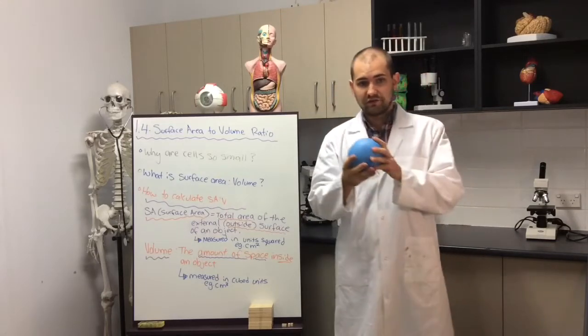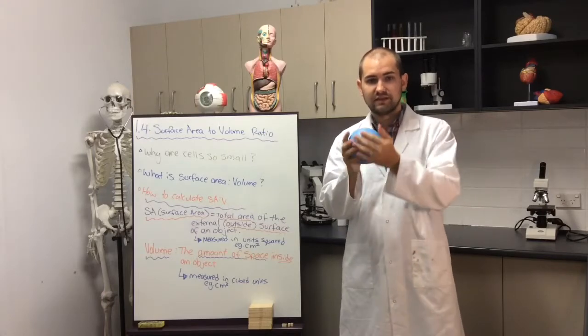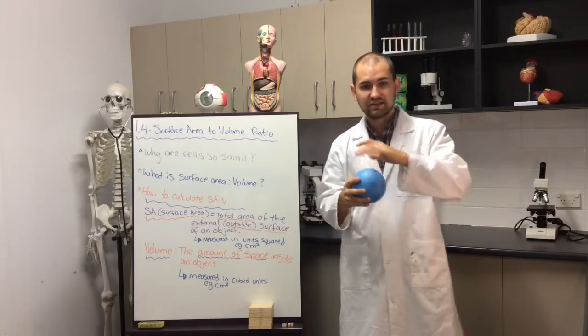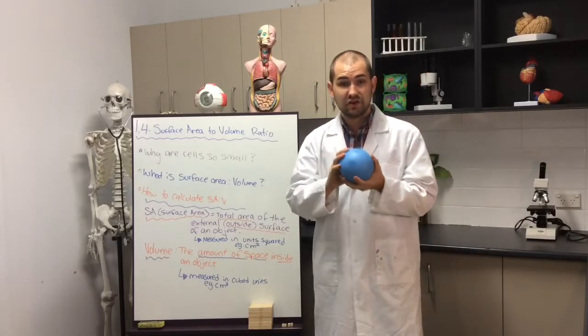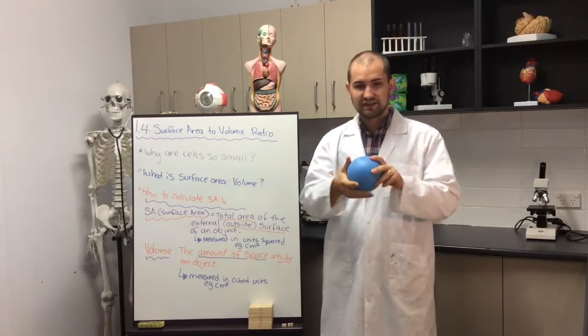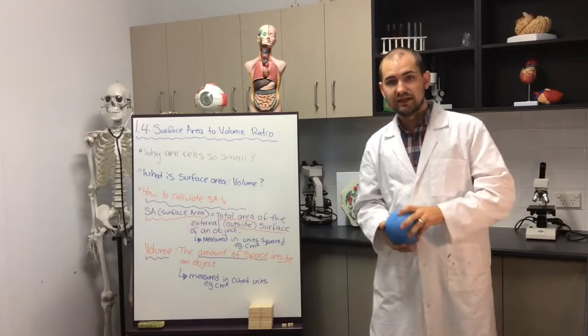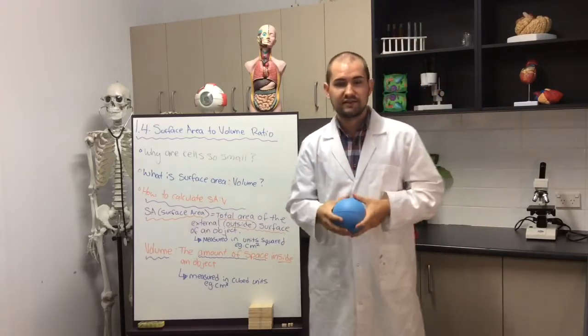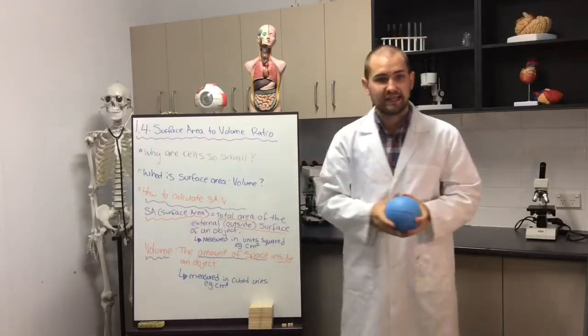The cell surface, so imagine that this here is a cell, the surface of this object is called the membrane. That's where that exchange occurs, that movement. So this membrane has a surface area. The area is just the amount of space on the external surface of an object. You can measure that using units squared, so something like centimeters squared. I'll talk to you a bit more about how to calculate that later on.